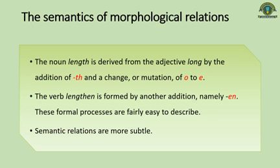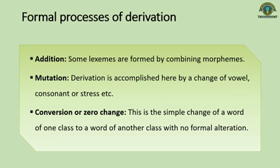In this chapter we will explore the formal ways of derivation and the semantic relations that exist between words — verbs derived from nouns, nouns derived from adjectives, and adjectives from verbs. There are four different types or processes of the relational relationship between words: addition, mutation, conversion, and subtraction.